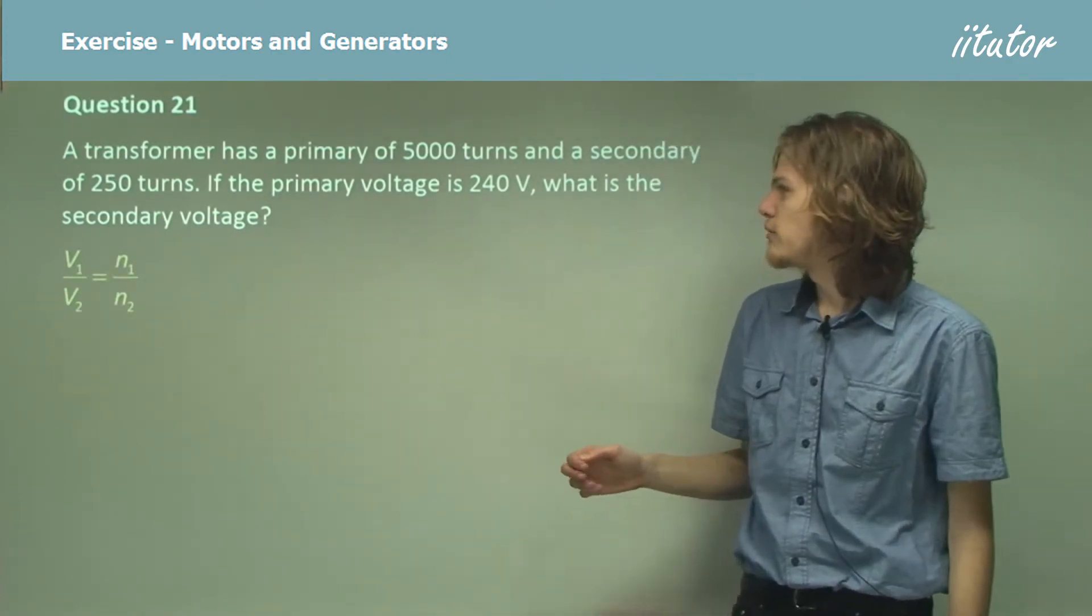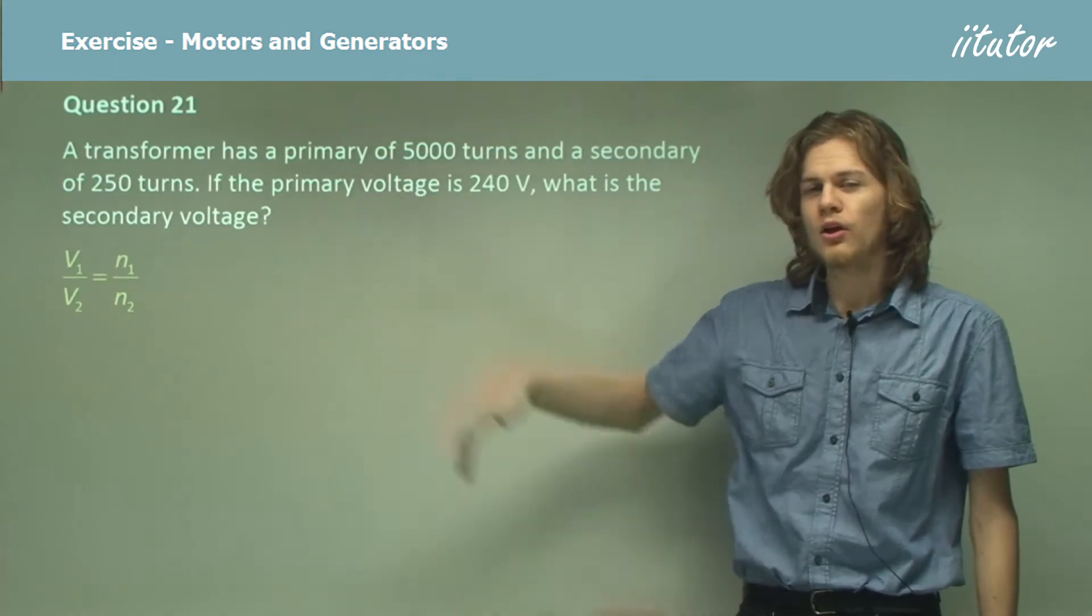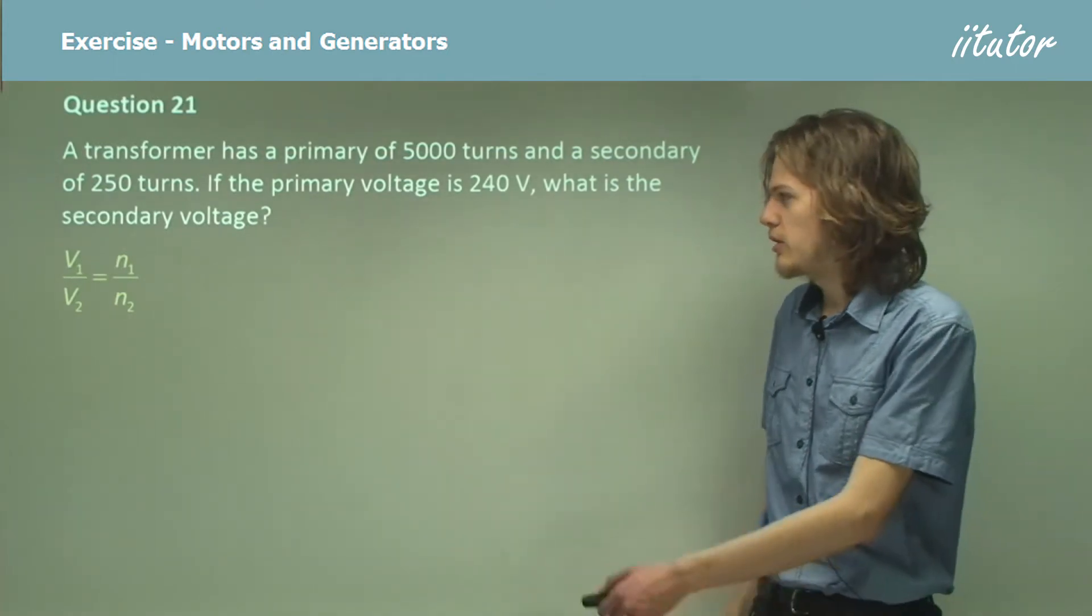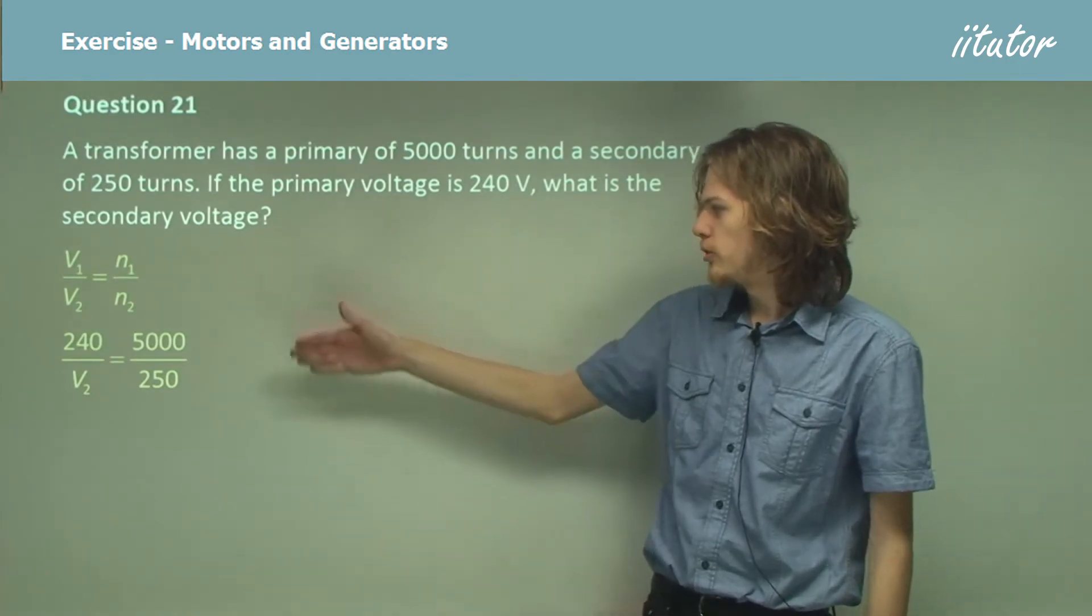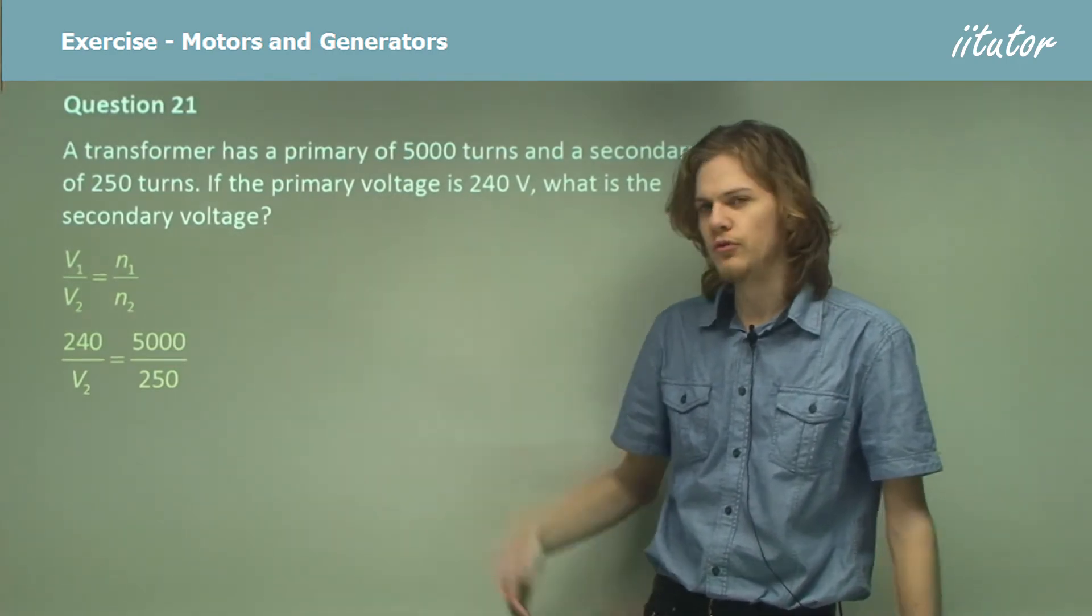In this case, we're looking for the secondary voltage, V2, so we can rearrange the equation a bit to look like this: 240 over V2 equals 5,000 over 250.